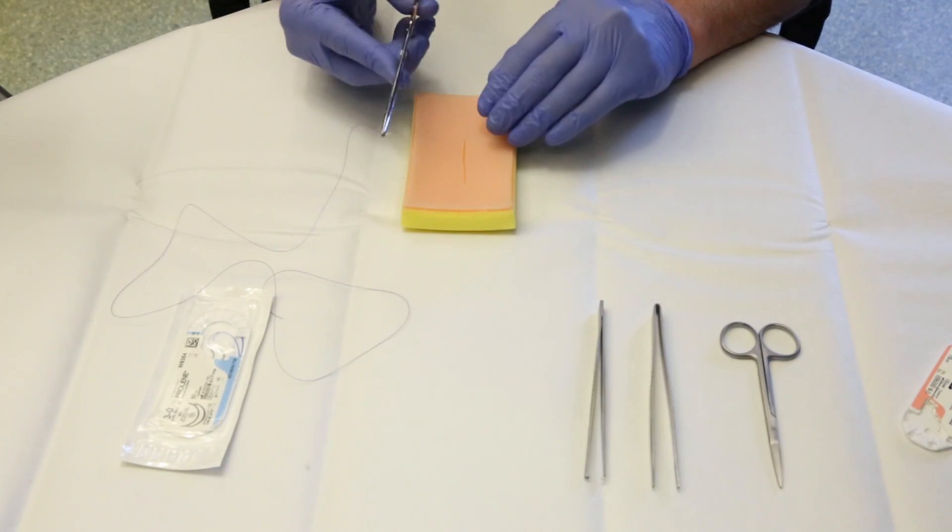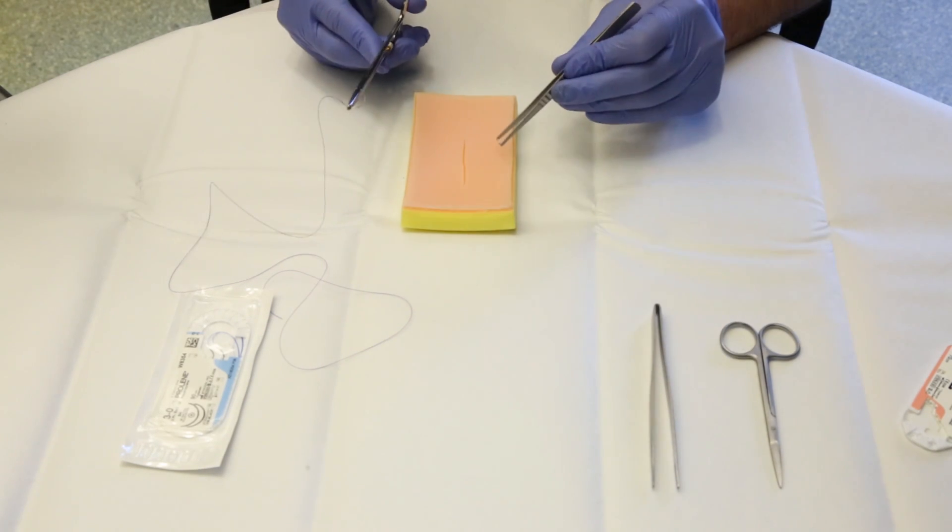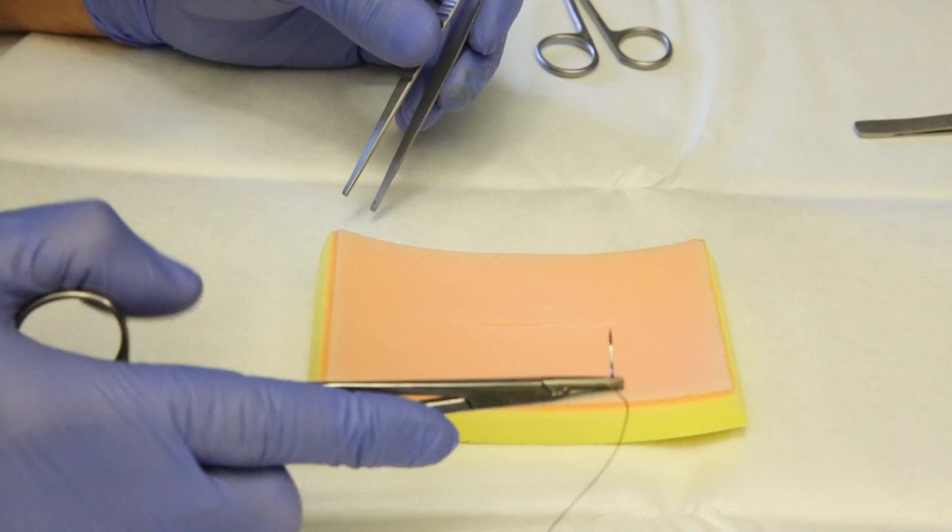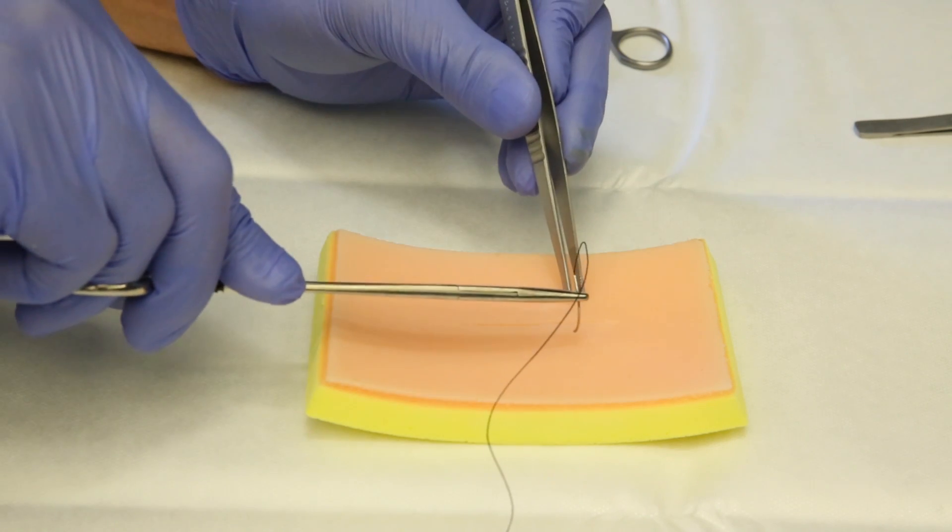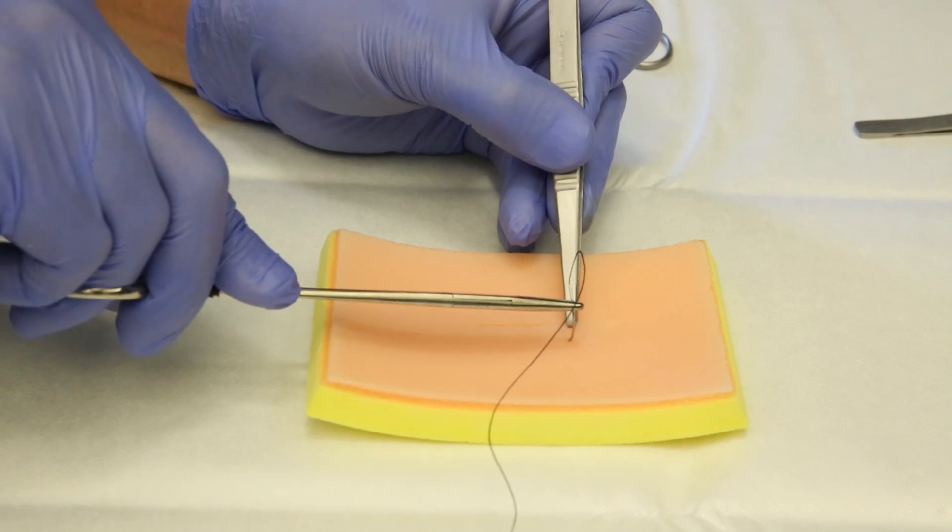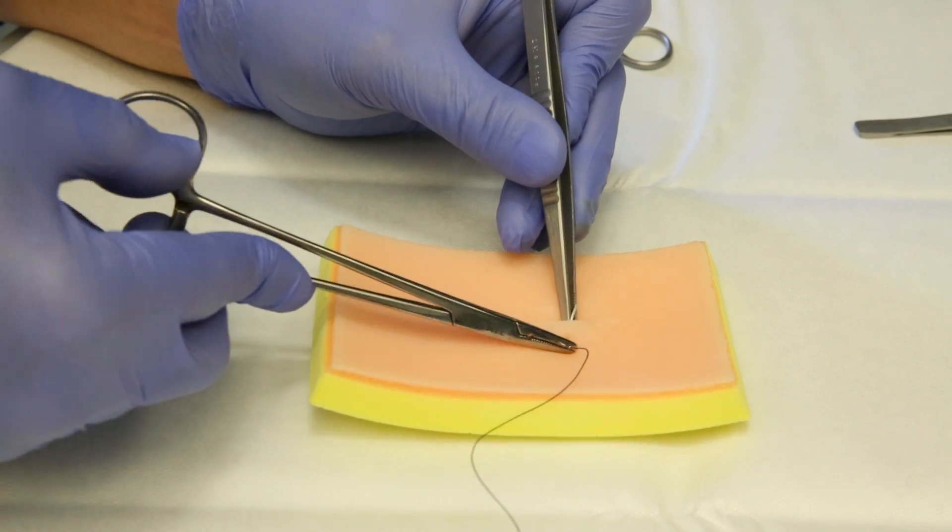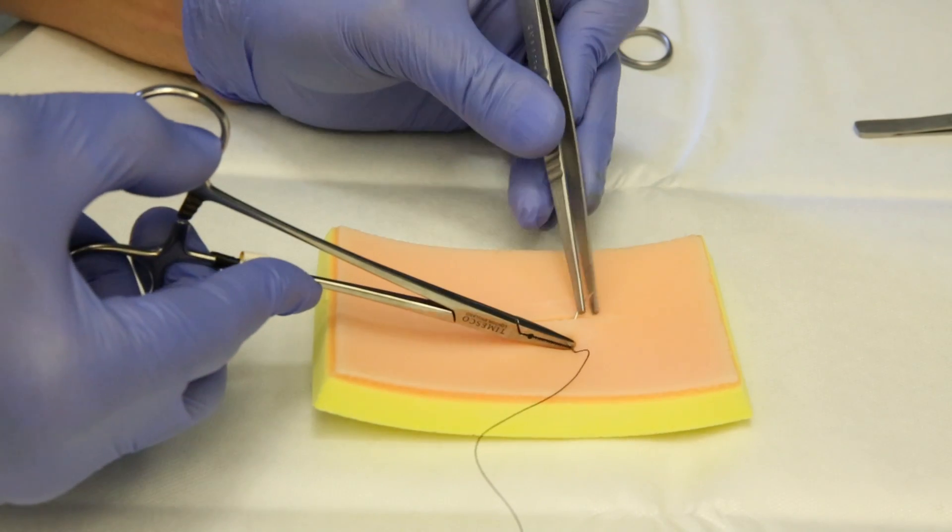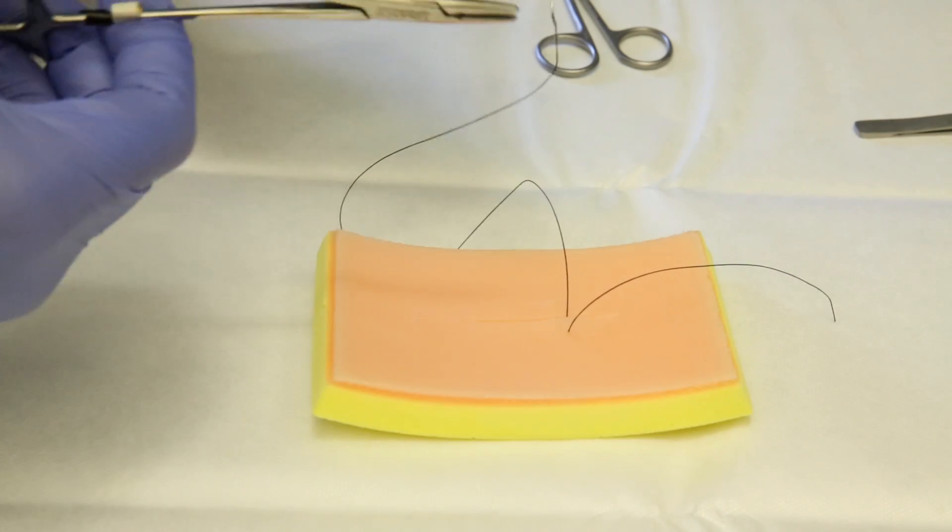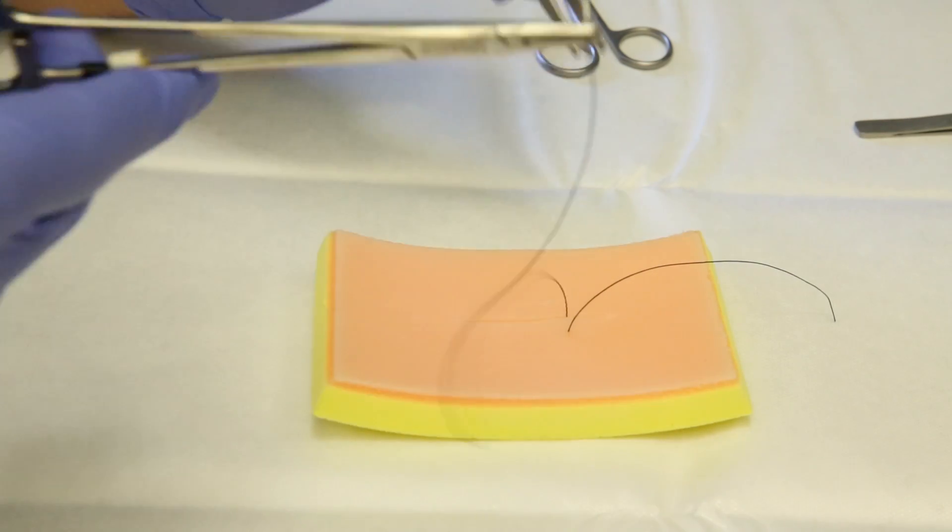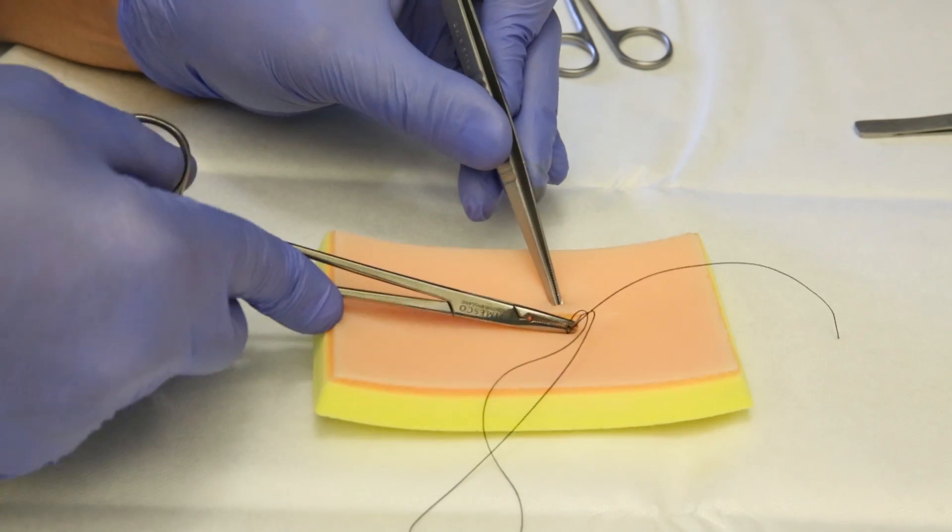Now to start the stitching, the first step is to take the needle across the wound margin. Going perpendicular from the right margin of the wound, through the skin, out through the wound, going back this time from inside the wound and out the skin.